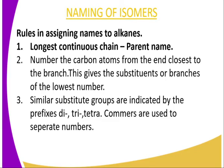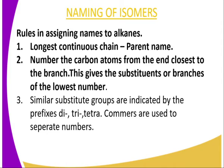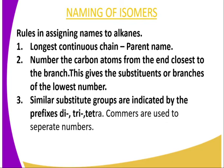Rule number two: number the carbon atoms from the end closest to the branch. This gives the substituent or the branch the lowest number. So we need to number the carbon atoms from the end closest to the branch, giving the substituent group or branch the lowest number. Rule number three: similar substituent groups are indicated by the prefixes di, tri, tetra, and commas are used to separate them.